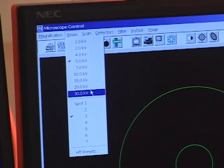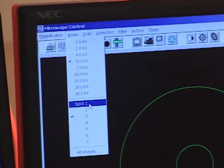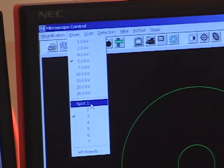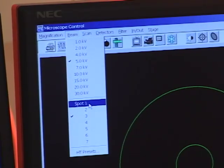Spot size then ranges from one to seven. One being the smallest diameter of electron beam and seven being the largest. Spot size one also has the least current, and so it's again less damaging and it's also the highest resolution. But because it has less current, it also has more noise. So it's a higher or lower signal to noise ratio.